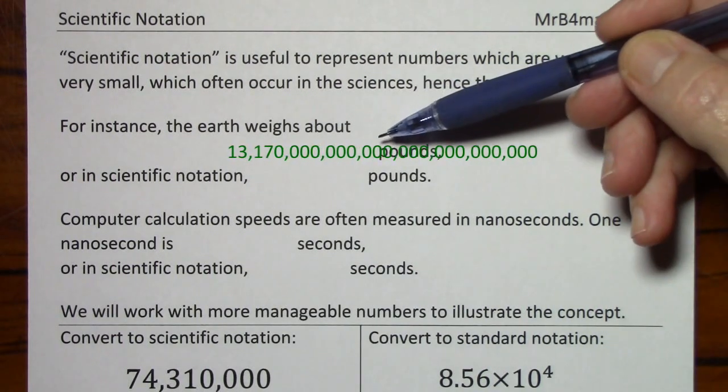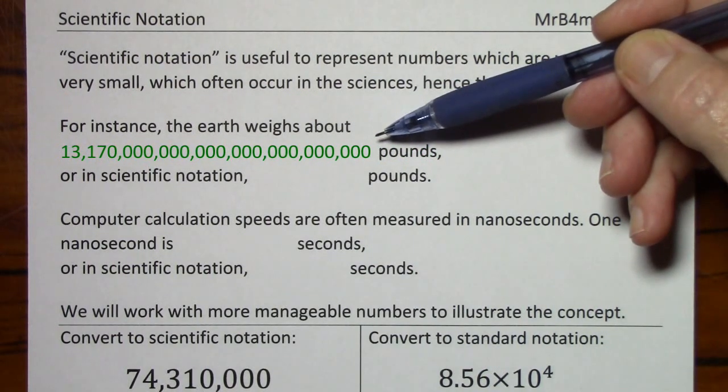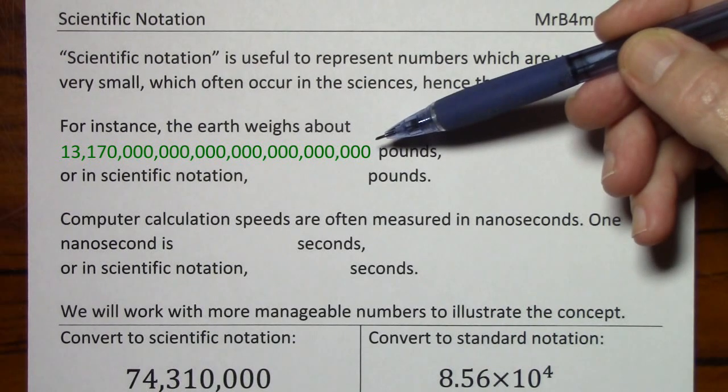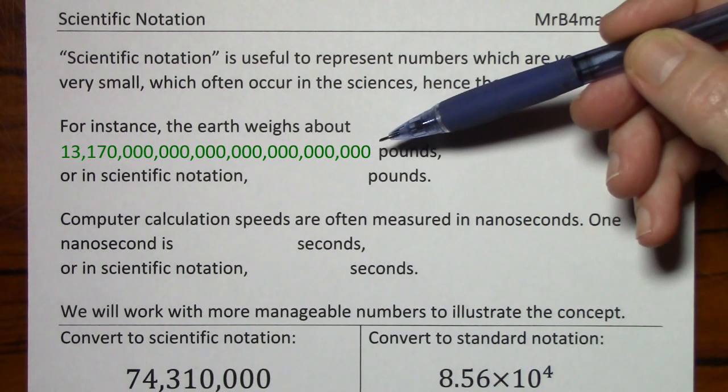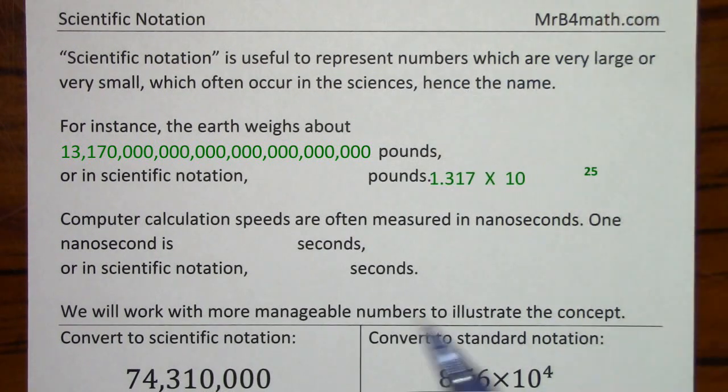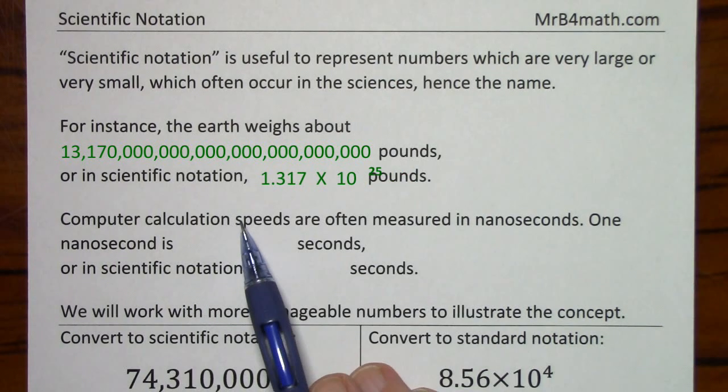For instance, the earth weighs about 13 septillion 170 sextillion pounds, written here in standard notation, or written here in scientific notation.